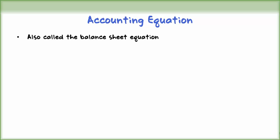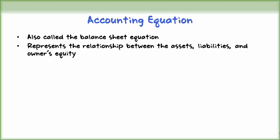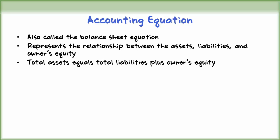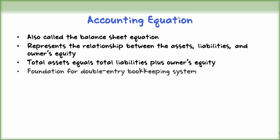In this video, we will determine the effect of business transactions on the basic accounting equation. The accounting equation, also called the balance sheet equation, represents the relationship between assets, liabilities, and owner's equity. The equation shows that the assets of a business must equal the sum of liabilities plus owner's equity. It is the foundation for the double-entry bookkeeping system.